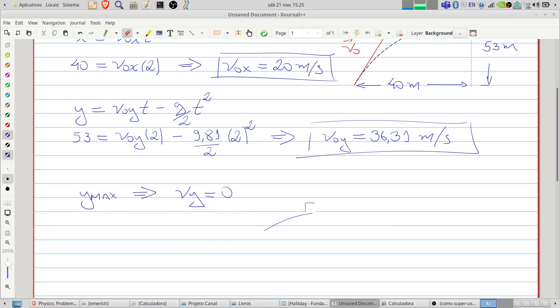Let's erase this. We also know that the y velocity will be described by the equation: y velocity equals the initial y velocity plus the acceleration, in this case minus g times t. So 0 equals here we have 36.31 minus 9.81 times t.